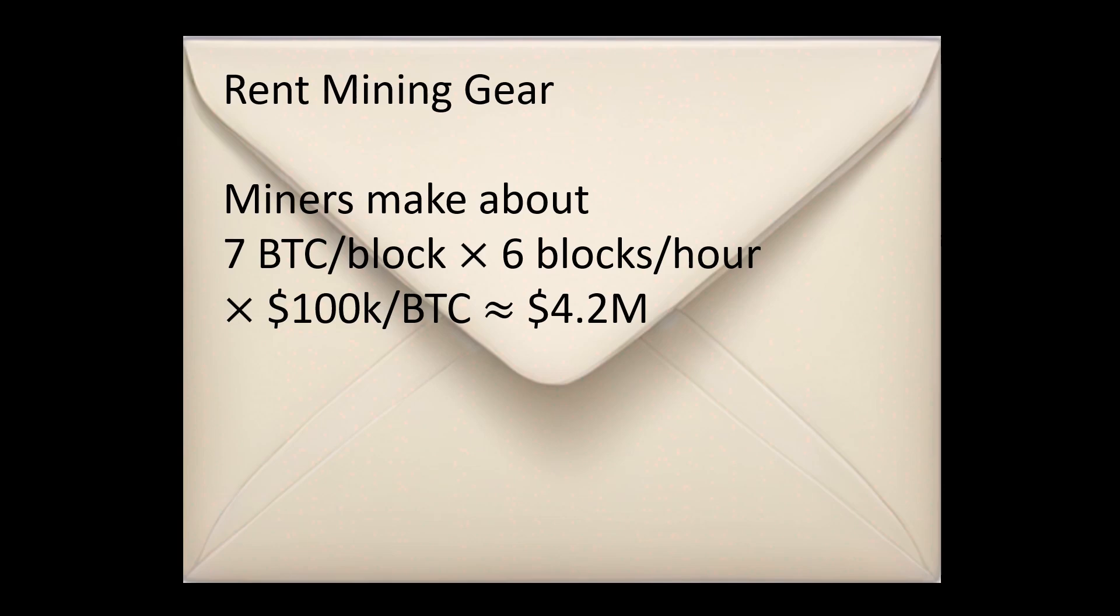Although the bitcoin price fluctuates a lot, let's assume that each bitcoin is worth about 100,000 US dollars. This means that all the miners make about 4.2 million dollars every hour. This is also a rough estimate for the energy consumption of bitcoin. As long as all miners combined pay less than 4.2 million dollars per hour for their energy, they are making a profit, and they have an incentive to buy more mining hardware and spend even more energy.